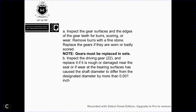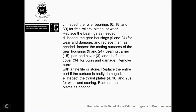Inspect the driving gear (item 22); replace if rough or damaged. Inspect wear surfaces of the cover; if the shaft diameter differs from the designated diameter by more than 1,000th of an inch, replace. Inspect roller bearings (items 6, 18, and 30) for free rolling, pitting, and wear; replace bearings as needed. Inspect gear housing (item 924) for wear and damage. Inspect mating surfaces of gear housing 924, bearing cover 15, port end cover, shaft cover, and cover 34 for burrs; use a fine flat stone to remove burrs. Replace entire parts if badly damaged. Inspect thrust plates (items 8, 4, 16, and 28) for wear and scoring; replace as needed.